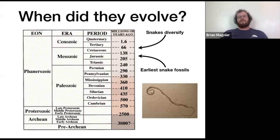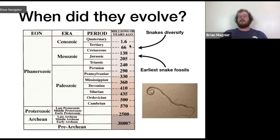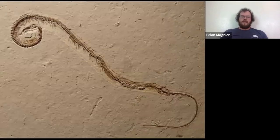How long have snakes been around? They kind of look prehistoric, almost like dinosaurs. The earliest fossils of snakes come from around 150 million years ago — right in the middle of the reign of the dinosaurs. After that they diversified and spread around, mostly after the dinosaurs went extinct about 66 million years ago. We have some sparse fossils from that whole period of snakes and snake-like reptiles, and after the dinosaurs disappeared there were a lot more niches to fill.